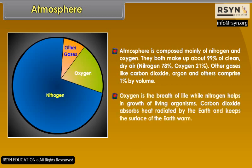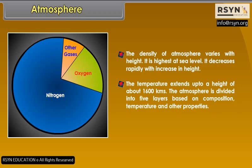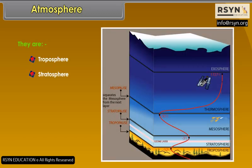Oxygen is the breath of life, while nitrogen helps in the growth of living organisms. Carbon dioxide absorbs heat radiated by the earth and keeps the surface warm. The density of atmosphere varies with height — it is highest at sea level and decreases rapidly with increase in height. The atmosphere extends up to a height of about 1,600 km. The atmosphere is divided into five layers based on composition, temperature, and other properties: troposphere, stratosphere, mesosphere, thermosphere, and exosphere.